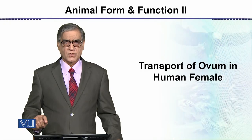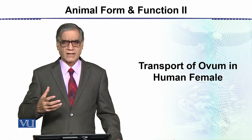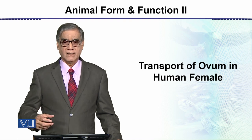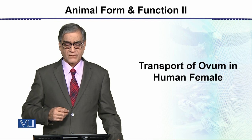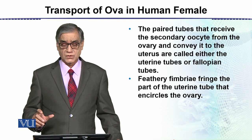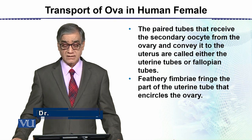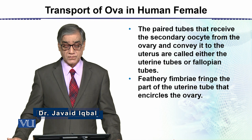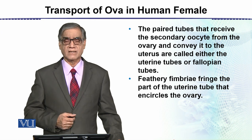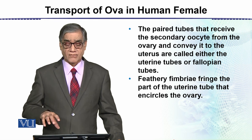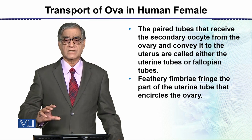This topic is the transport of ovum in human female. یہ جب egg release ہوتا ہے، یعنی ovulation کے بعد ہم نے دیکھنا ہے کہ the released egg کا root کیا ہے اور where it moves. The uterine tubes receive the secondary oocyte from the ovary and convey it to the uterus — these are called either the uterine tubes or the fallopian tubes. ہم female reproductive system کو explain کرتے ہیں۔